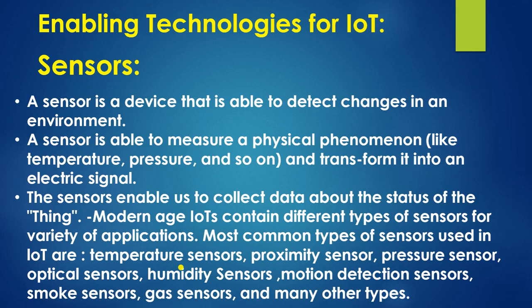Sensors enable us to collect data about the status of things. Modern IoT devices contain different types of sensors for a variety of applications. The most common types of sensors used in IoT are temperature sensors, proximity sensors, pressure sensors, optical sensors, humidity sensors, motion detection sensors, smoke sensors, gas sensors, and many other types.